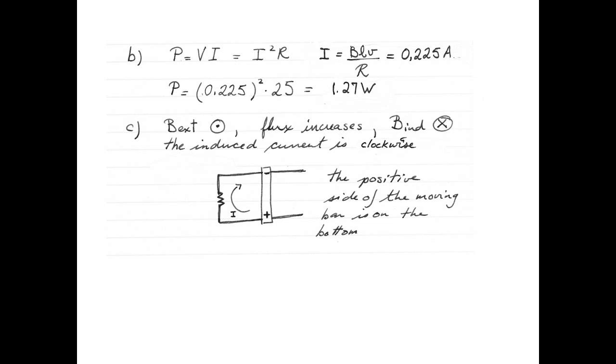The motional EMF, like a battery, provides electrical energy to the circuit. In order to provide a current that flows clockwise, we need to have the positive side of the moving bar on the bottom. Let's check if this makes sense. The current flows from the negative side to the positive side of the bar providing EMF, just like in a battery.